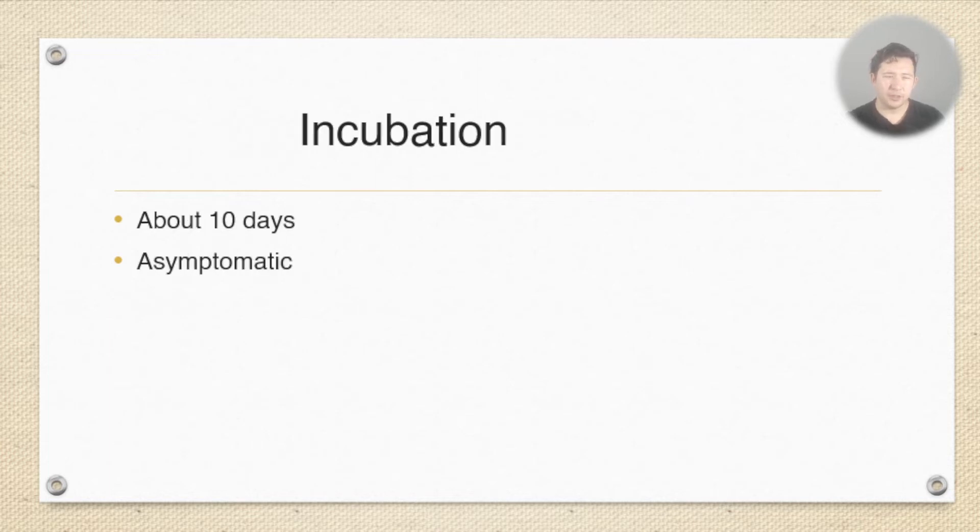The first one is incubation. From the time of exposure, and you really don't need much exposure because it's a highly infectious airborne disease, you then have about 10 days of incubation where often people are asymptomatic. They don't have any signs of developing measles. Then from about day 10, can be day 12, you go into this next phase which is the prodrome.